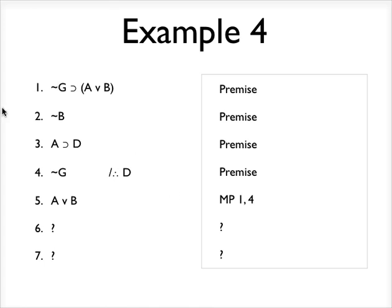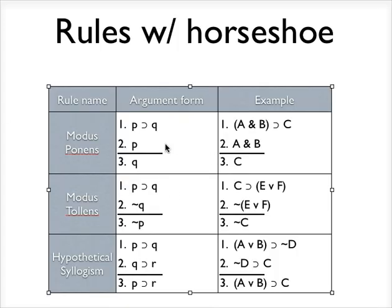Again, just because there's a negation, let's go back to these really quickly. Here's modus ponens, right? The form says if you have a conditional and the antecedent of that conditional, then you can derive the consequent. Again, this is just the form. The statements themselves could be complex.